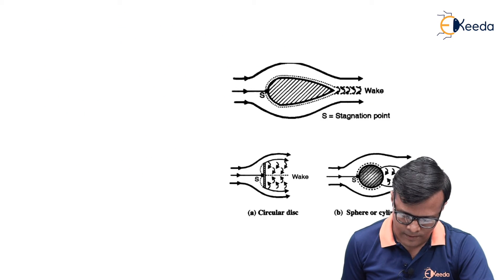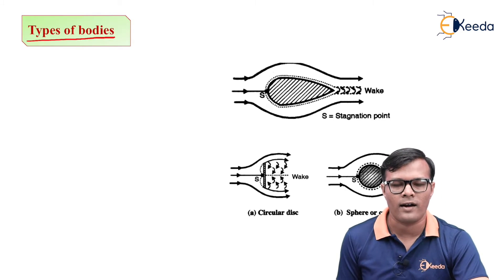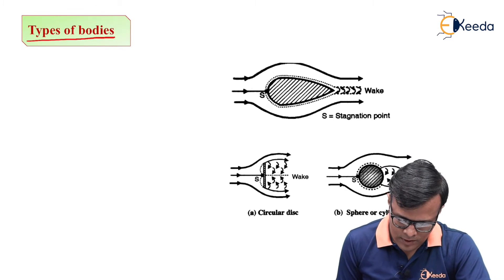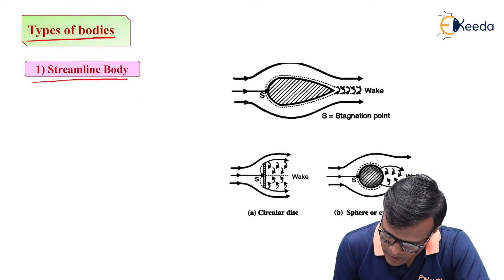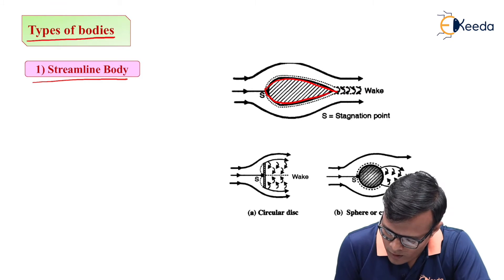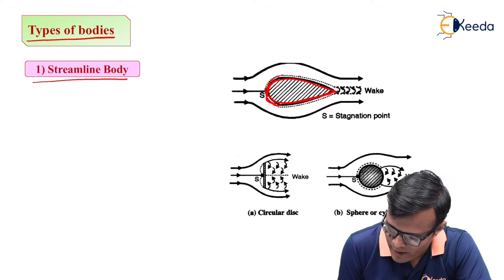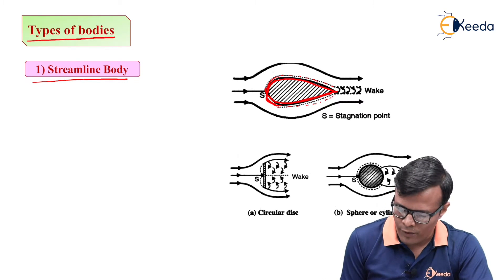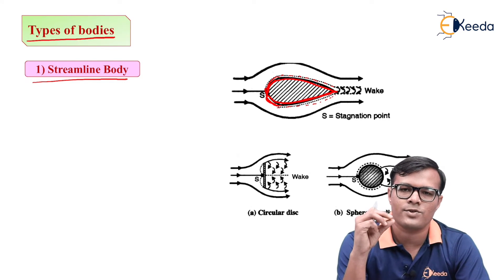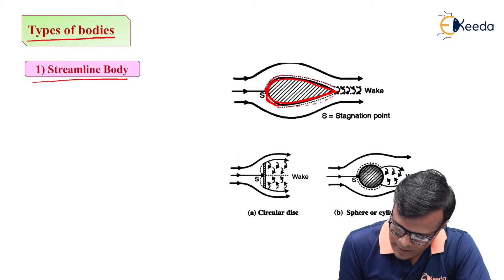Now we will consider types of bodies on which forces are considered. So first type is streamlined body. This is the shape called streamlined shape in which this dotted line, it is nothing but the boundary layer. As we have very less chances of wake formation or zero chances of wake formation at the trailing edge. So this is the formed wakes.